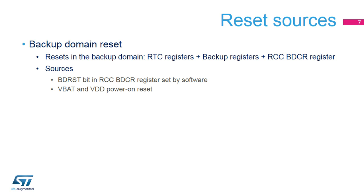The third type of reset is the backup domain reset, which resets the RTC registers, the backup registers, and the RCC backup domain control register. This reset occurs when the BDRST bit is set in the RCC backup domain control register. It also occurs when VDD and VBAT are powered on, if both supplies have previously been powered off.